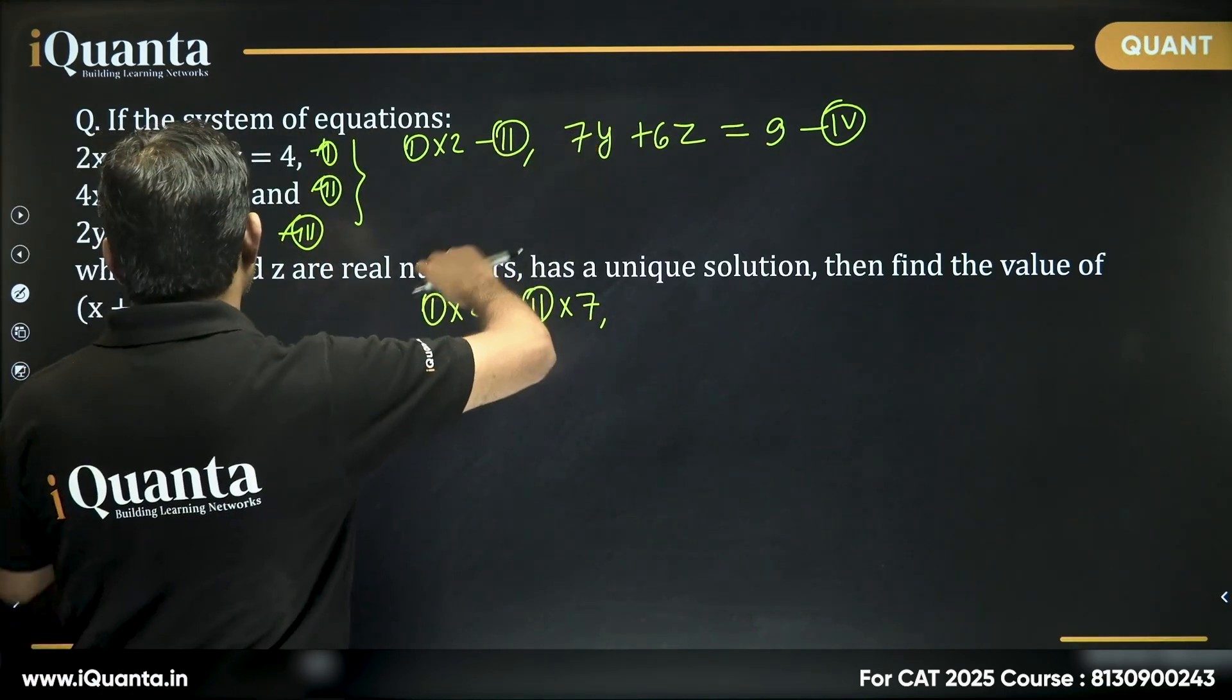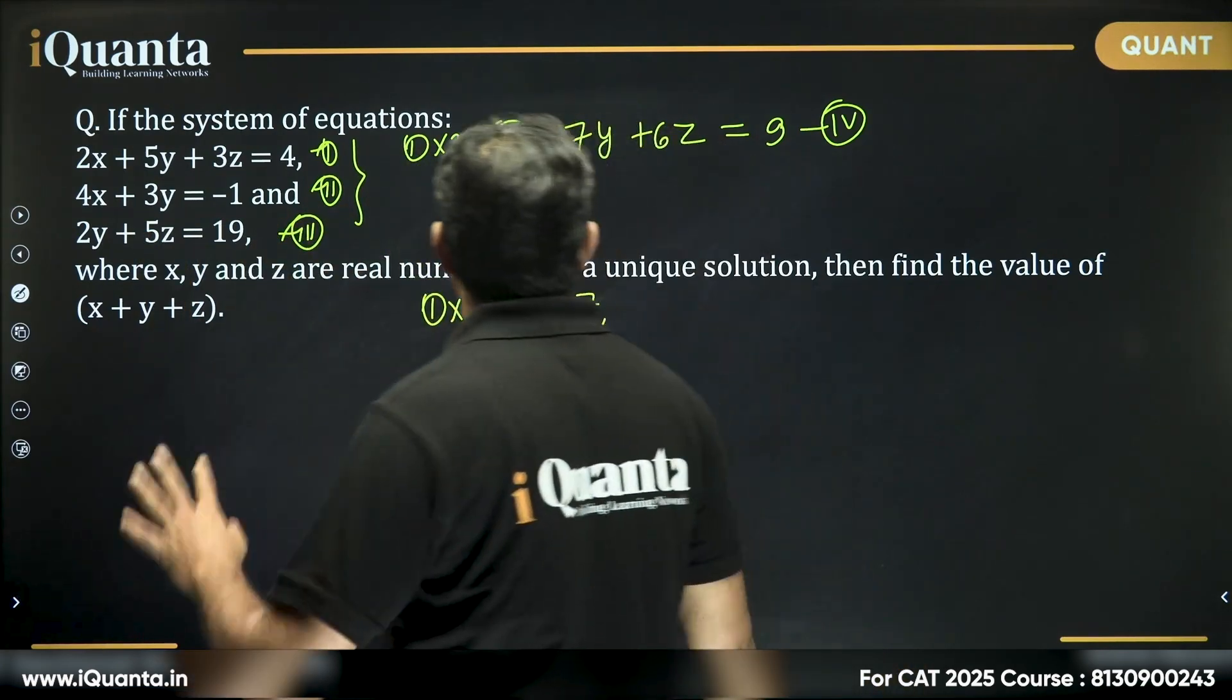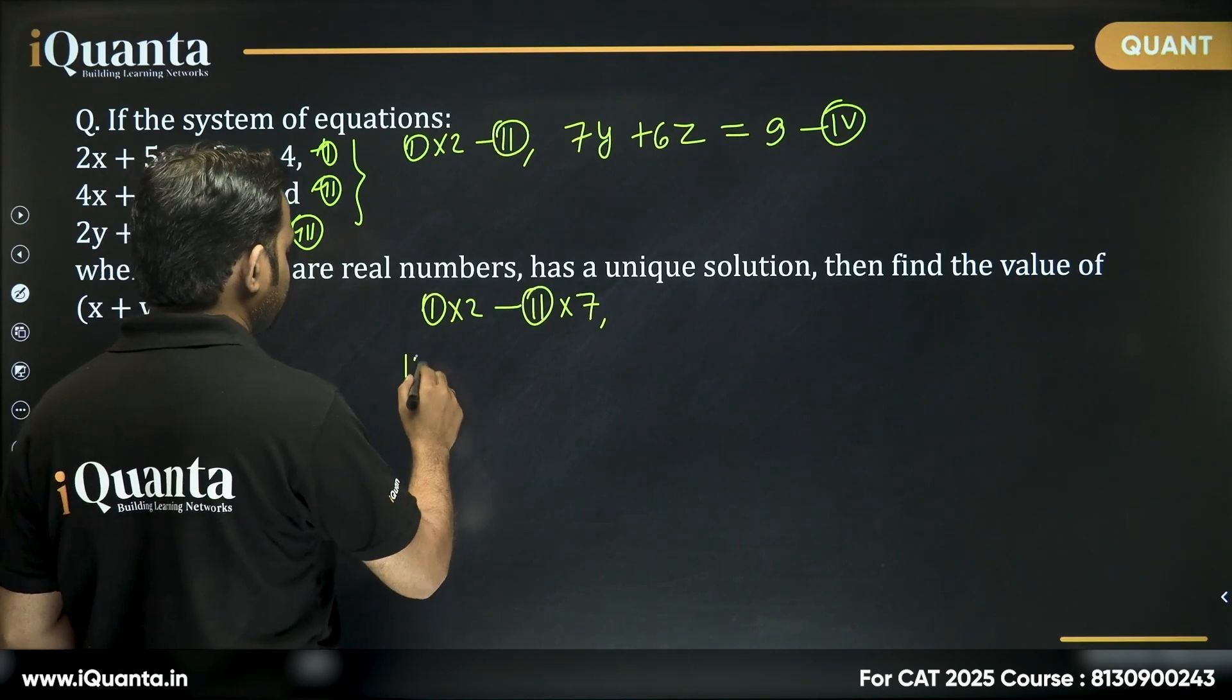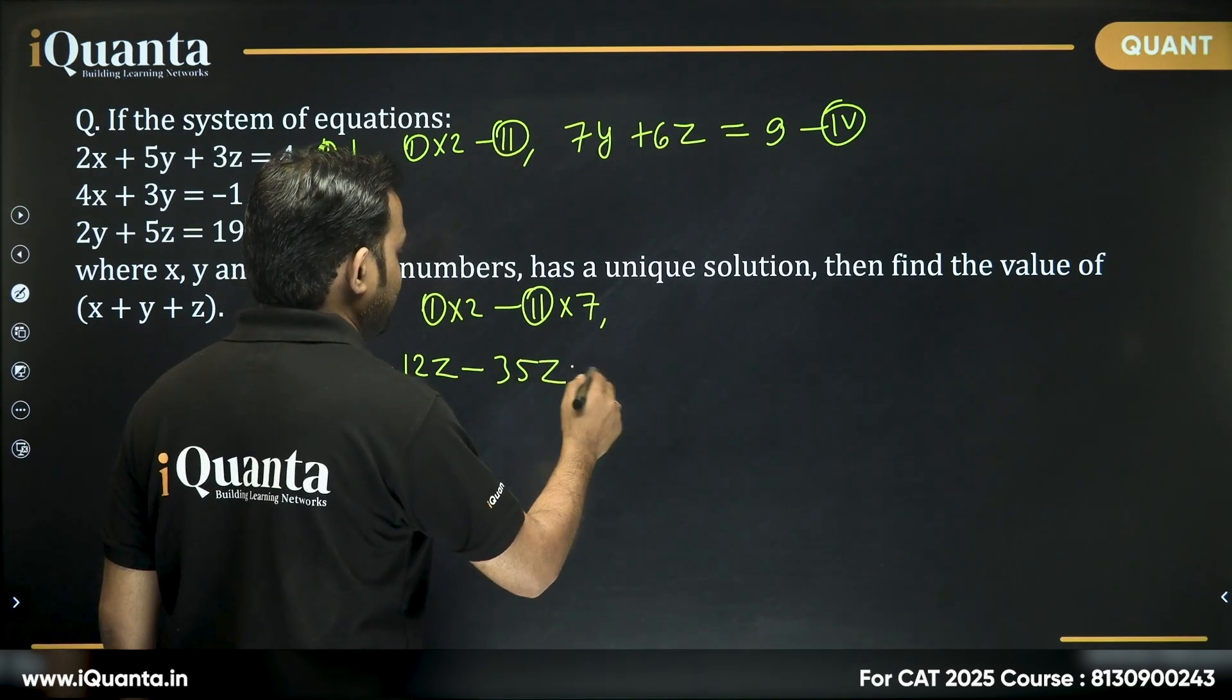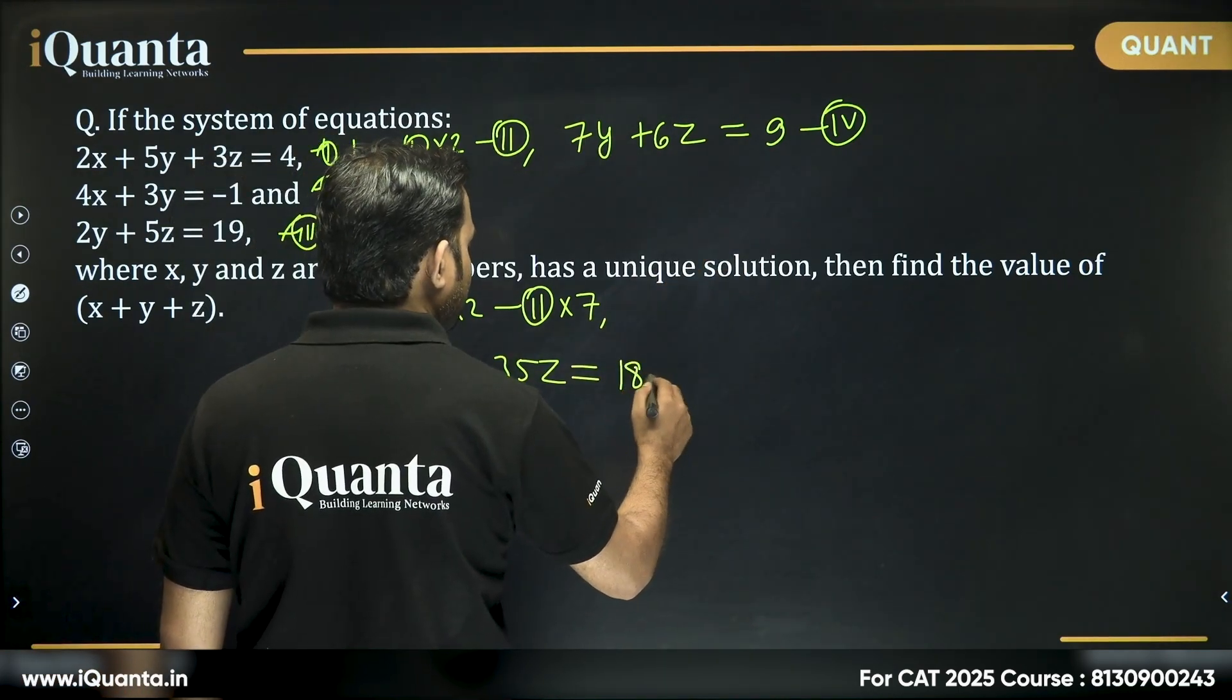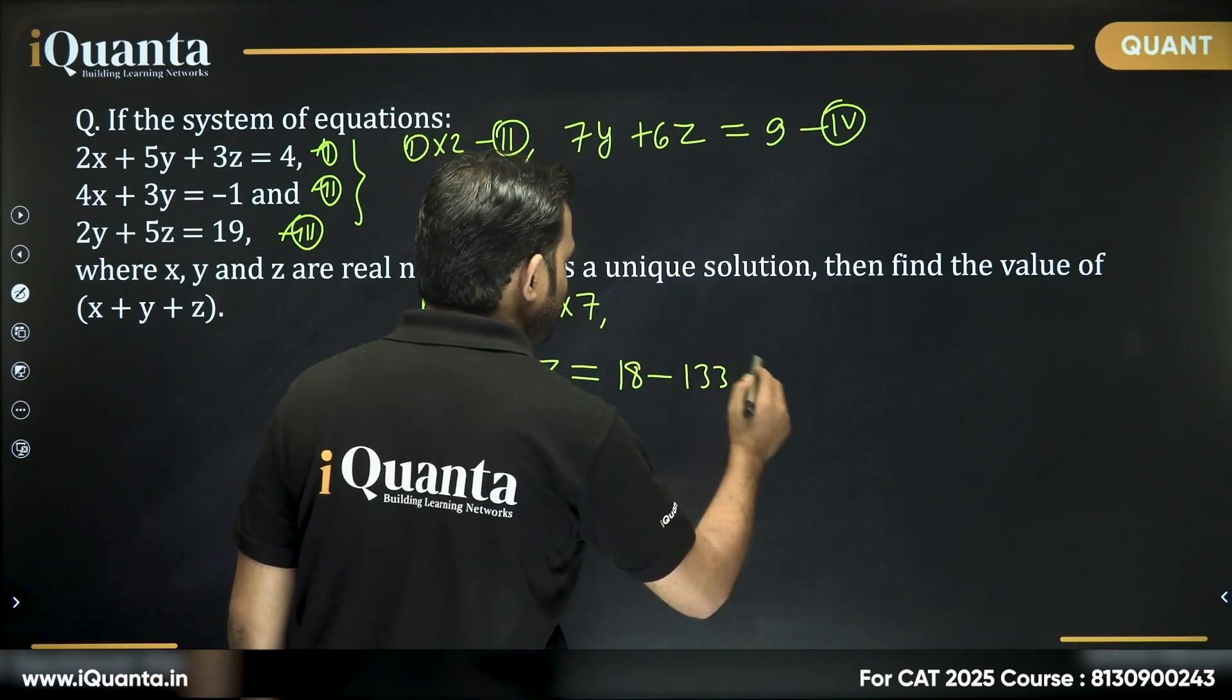7y times 2 is 14y. 2y times 7 is 14y, so they cancel out. 6z times 2 is 12z minus 5z times 7 is 35z, giving -23z. This equals 9 times 2 which is 18, minus 19 times 7 which is 133.